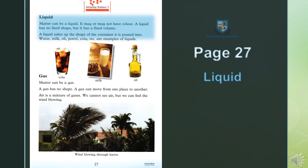Page 27: Liquid — maya. Matter can be a liquid — maada liquid yani maya bhi ho sakta hai. It may or may not have color — ya toh iska rung hoga ya iska rung nahi hoga. A liquid has no fixed shape — liquid yani maya ki koi makhsoos shakal nahi hoti. But it has a fixed volume — lekin iska volume fix hota hai. Yani agar aap ne ek liter liquid liya hai, toh woh ek liter hi rahega, chahe aap uski jo marzi shape kar den. A liquid takes up the shape of the container it is poured into — liquid ko jis bartan mein daala jata hai, yeh usi ki shakal ikhtiyar kar leta hai. Water, milk, oil, petrol, cola, etc. are examples of liquid.